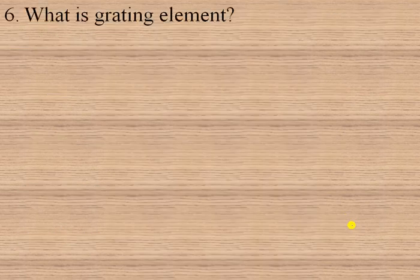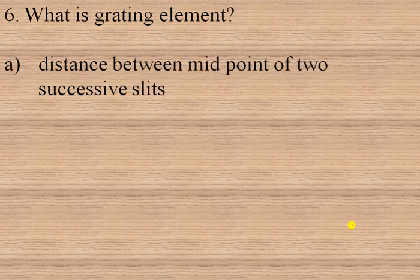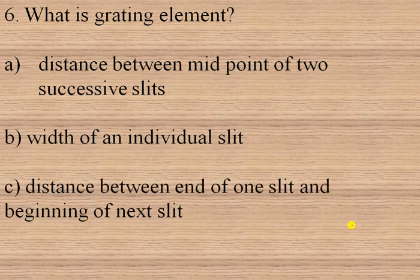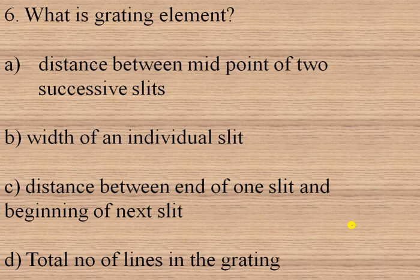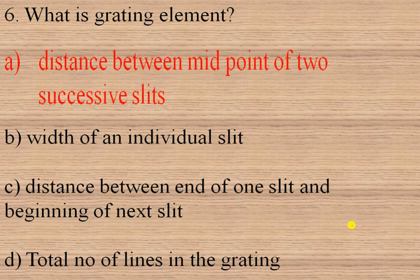The next question is: what is the grating element? Options are — distance between the midpoint of two successive slits, width of an individual slit, distance between the end of one slit and the beginning of the next slit, or total number of lines in the grating. The grating element is the distance between two successive slits, meaning the distance between the midpoints of two successive slits. So option A is the right option.